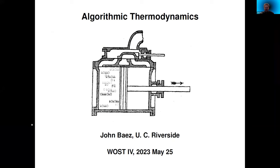I'm perhaps talking about something a bit different than anything that came before. The title is algorithmic thermodynamics — it's an attempt to blend ideas from algorithmic information theory with more traditional ideas of thermodynamics. I'll give mainly an expository talk so that everybody can learn the beautiful results that already exist, that my collaborator Mike Stay and I were building on, and then just near the end get into a bit of our new stuff.